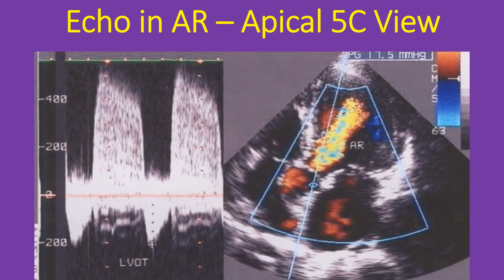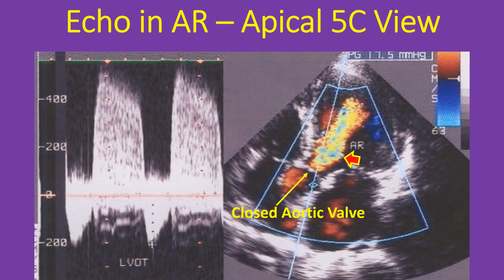Here we have both continuous wave Doppler and color Doppler imaging from apical 5-chamber view side by side. The right panel shows continuous wave Doppler of the aortic regurgitation jet. Below the baseline, forward aortic flow is seen, while above the baseline, the tongue-shaped aortic regurgitation jet is seen. The apical 5-chamber view in the left panel shows color Doppler image of aortic regurgitation with a wide multicolored jet originating from the closed aortic valve into the left ventricle. From the extent of the AR jet into the left ventricle, it is moderately severe AR.